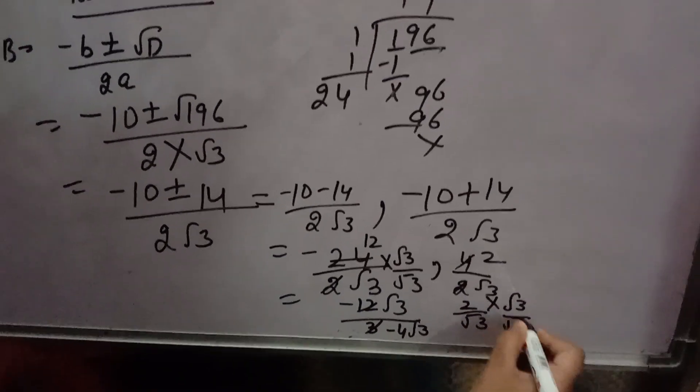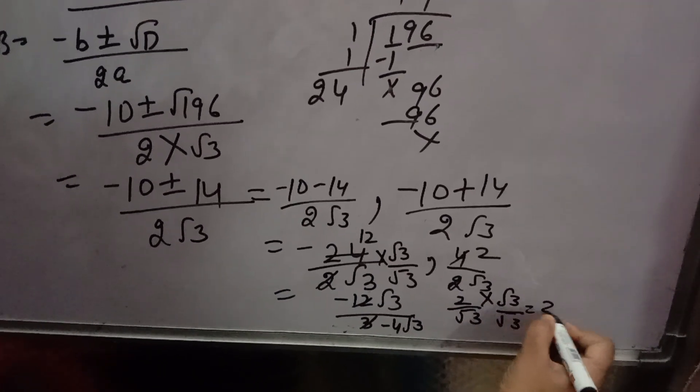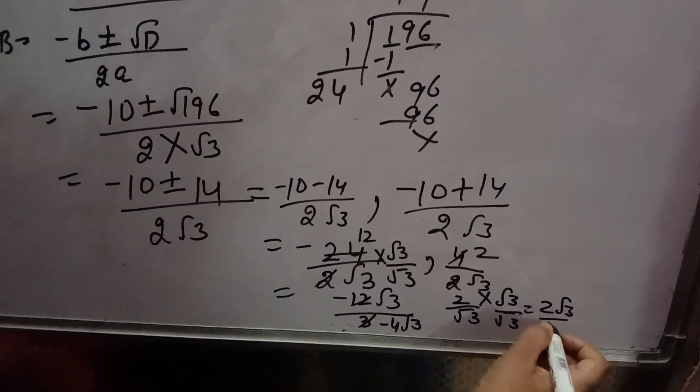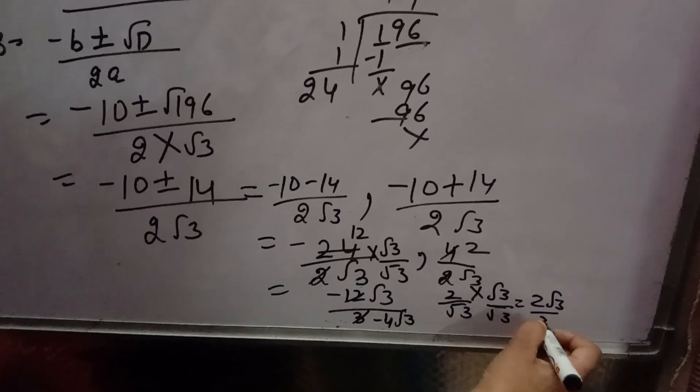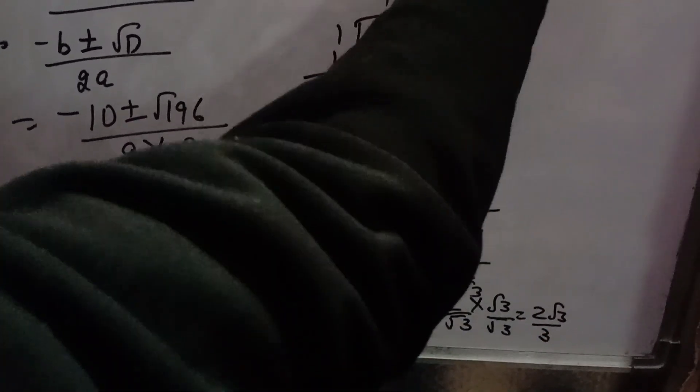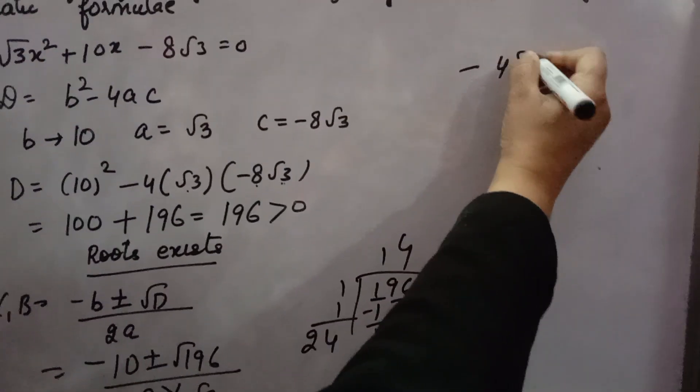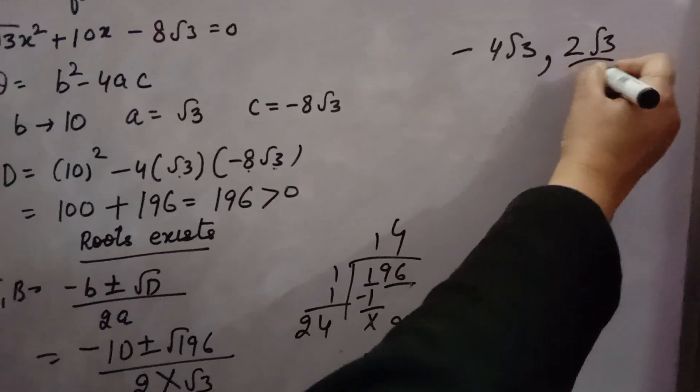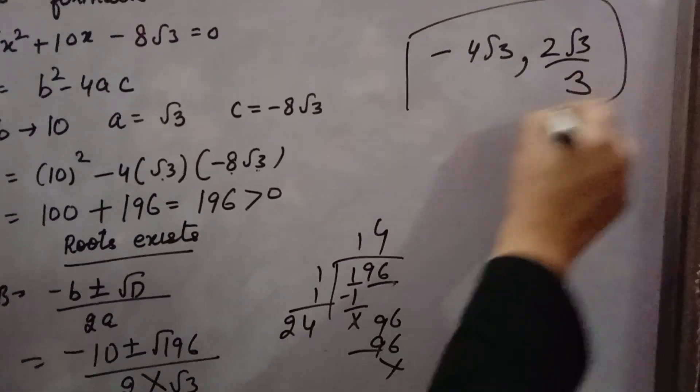Here, you write root 3. Here, root 3. So, you will get 2 root 3 over root 3 into root 3 is 3. So, roots are, I am writing clearly here. One is minus 4 root 3 and another is 2 root 3 over 3. This is the answer.